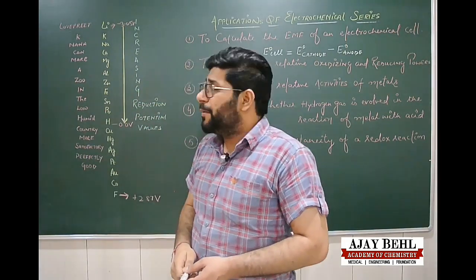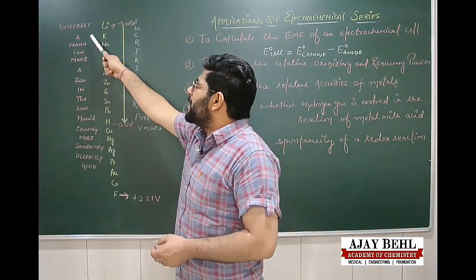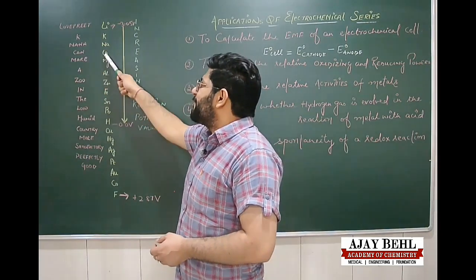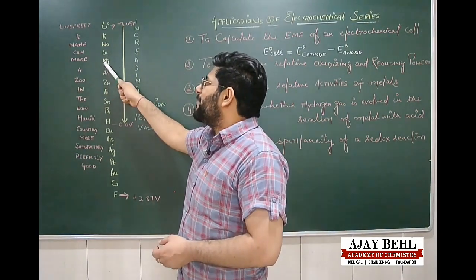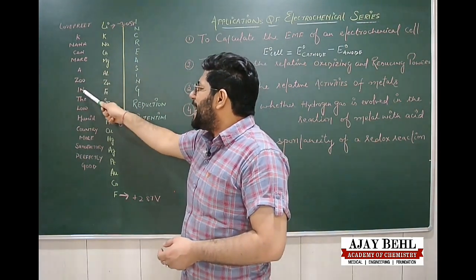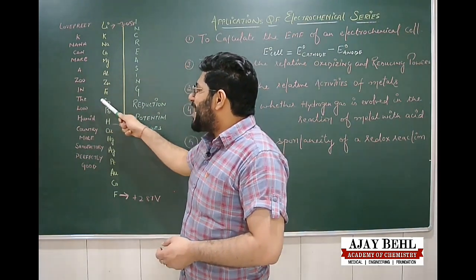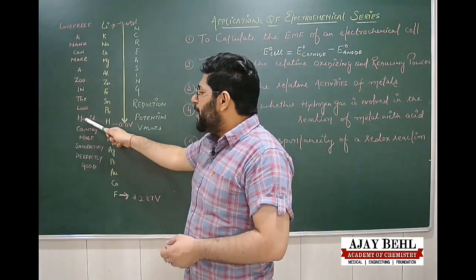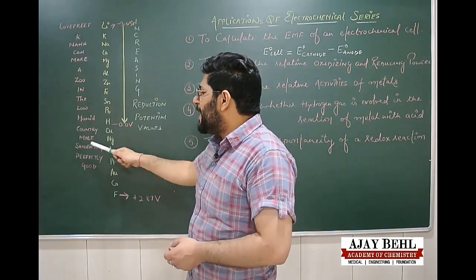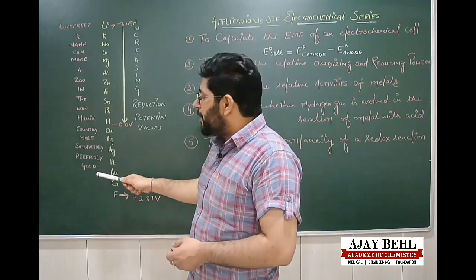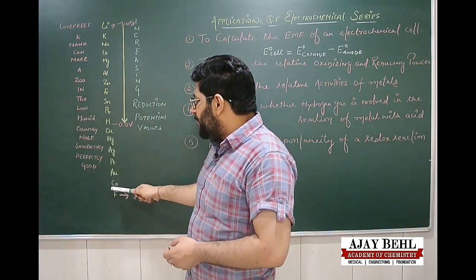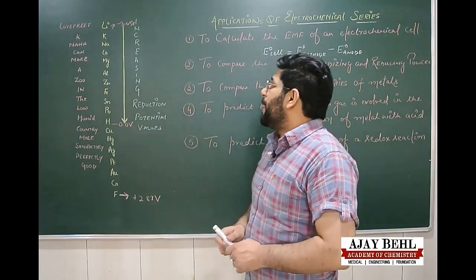Lovepreet stands for lithium, K for potassium, Nana for sodium, can for calcium, make for magnesium, A for aluminium, zoo for zinc, N for iron, D for tin, low for lead, humid for hydrogen, country for copper, more for mercury, satisfactory for silver, perfectly for platinum, and good for gold.